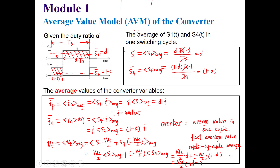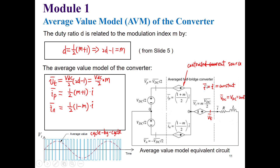Based on this theory, the average of the switching state for the upper switch is equal to duty cycle D, and for the lower switch is 1 minus D. We already know D equals half M plus 1, then we replace 2D minus 1 by M to get the average value model.